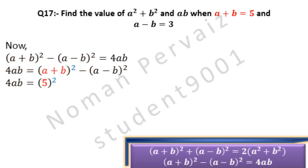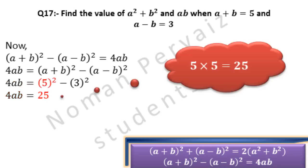From the question, a + b = 5, so we write 5 in place of (a + b), then square. Minus comes as it is. Again, a − b = 3, so we write 3 in place of (a − b), then square. Opening 5²: 5 multiplied by 5 becomes 25.